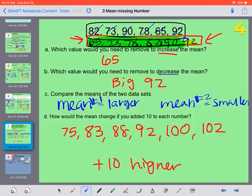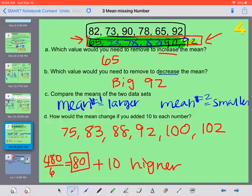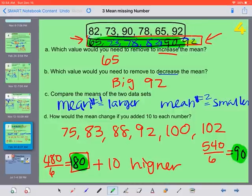If you don't believe me, let's figure it out. If we found our original mean with these numbers right here, 82 plus 73, plus 90, plus 78, plus 65, plus 92, we had 480 divided by 6. That gives us 80. So our original mean was 80. But if we added 10 to all of them, then we have 75 plus 83, plus 88, plus 92, plus 100, plus 102. Gives us 540. Still divided by 6 numbers. Gives us 90. So by adding 10 to each number, our mean also went 10 higher. It went up by 10.